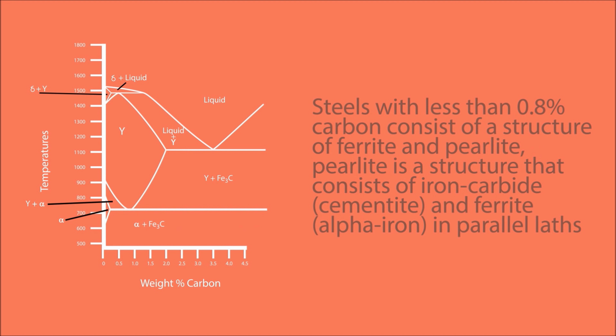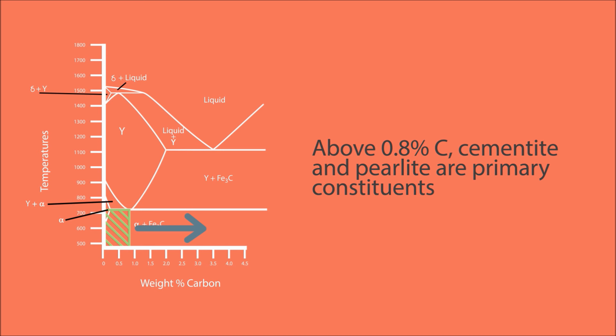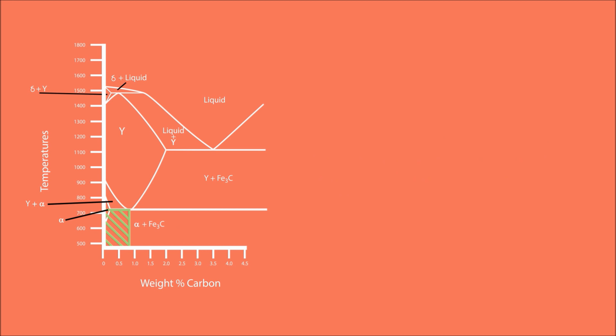Below 723°C we can see Fe₃C, which is iron carbide, called cementite — a ceramic compound of iron and carbon. Steels with less than 0.8 percent carbon consist of a structure of ferrite and pearlite. Pearlite is a structure that consists of iron carbide (cementite) and ferrite (alpha iron) in parallel laths. Above 0.8 percent carbon, cementite and pearlite are the primary constituents.